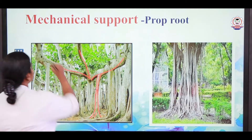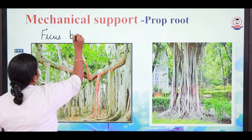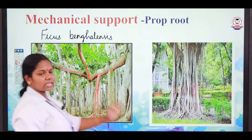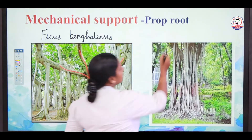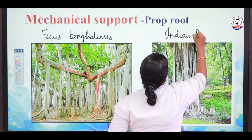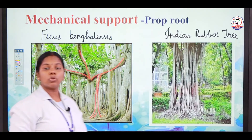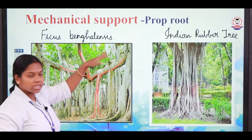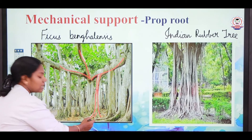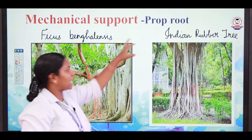The scientific name of banyan tree is Ficus bengalensis. Another example of prop roots is the Indian rubber tree. The roots which arise from the lateral branches and form vertically downward roots, such roots adhere firmly to the soil and provide additional support to the tree — these are called prop roots.